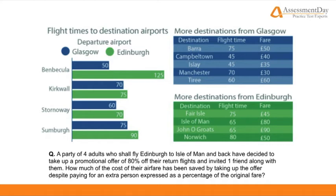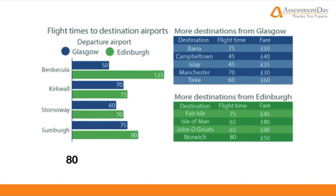To calculate the scenarios we require the fare price for Edinburgh to the Isle of Man, which can be discovered using the green colour scheme indicating Edinburgh and the Isle of Man. The fare is £80 each way, therefore a round journey will cost £160. Thus for four adults, the first scenario will cost £640.